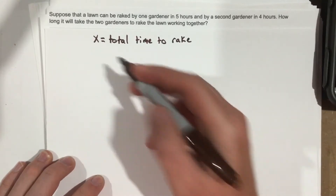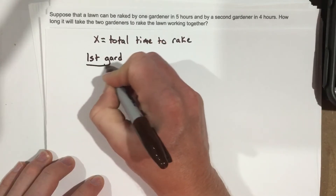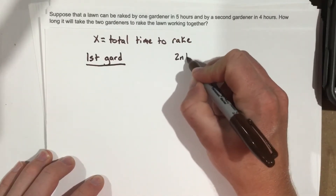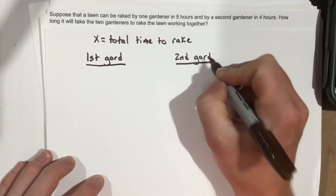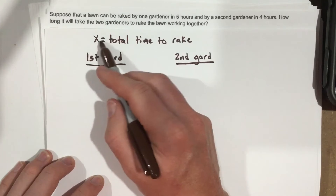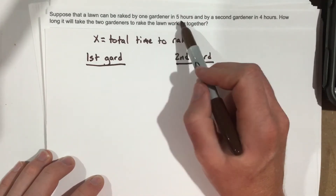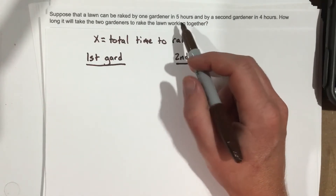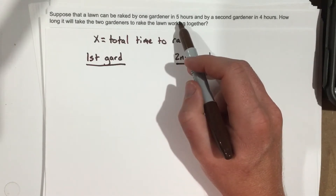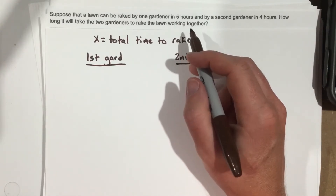If x is the total time to rake, we have the first gardener and the second gardener. For the first gardener, because this gardener takes five hours to rake the lawn, this gardener is essentially doing one-fifth of the job each hour. If it takes you five hours to do something, then each hour you're doing one-fifth of that job.